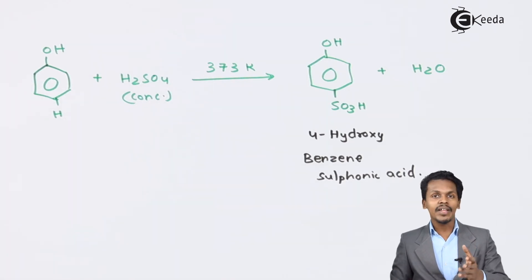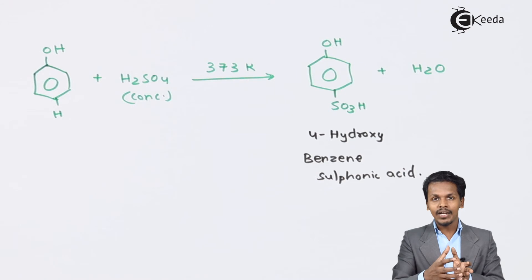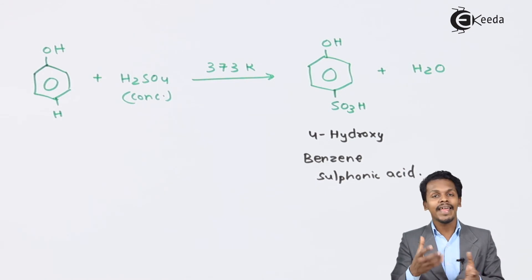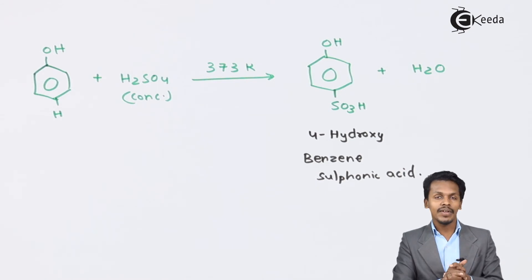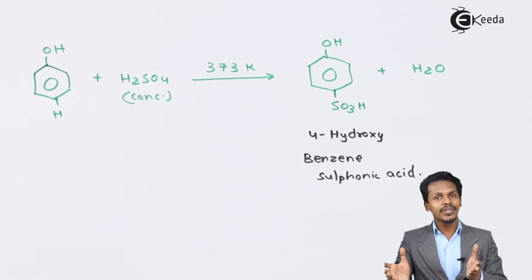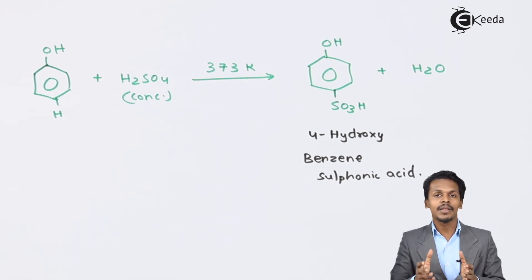This kind of reaction, where one hydrogen atom of the benzene ring is replaced by an SO₃H group, is known as a sulfonation reaction. Both reactions discussed here are examples of sulfonation.